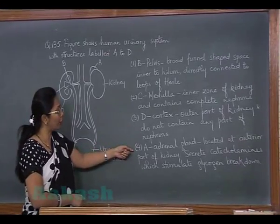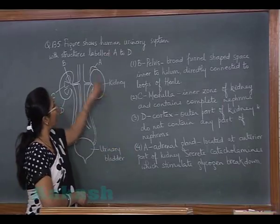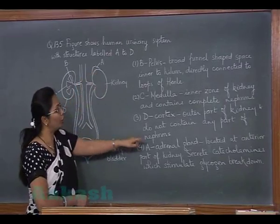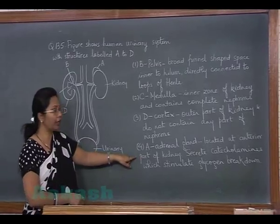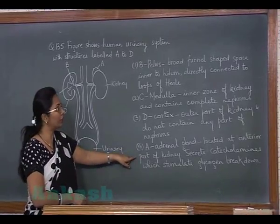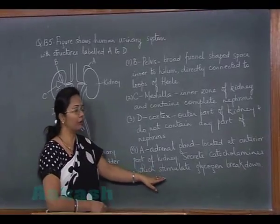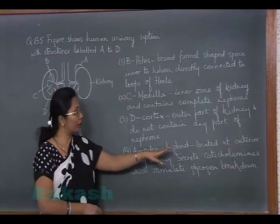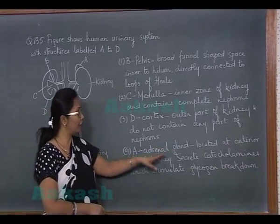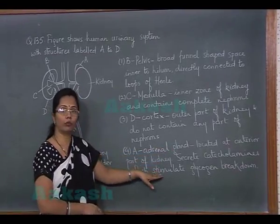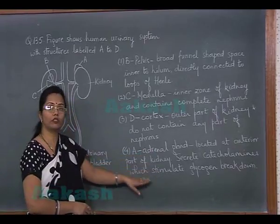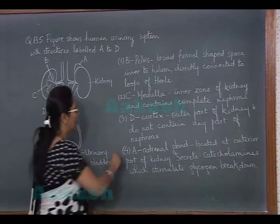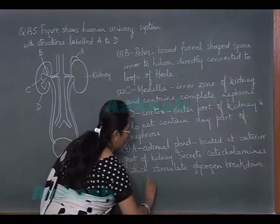Option 4 states A is the adrenal gland, located at the anterior part of the kidney, which secretes catecholamines that stimulate glycogen breakdown. One of the catecholamines is adrenalin, secreted from the adrenal gland. This gives the correct identification and function, so the answer is option 4.